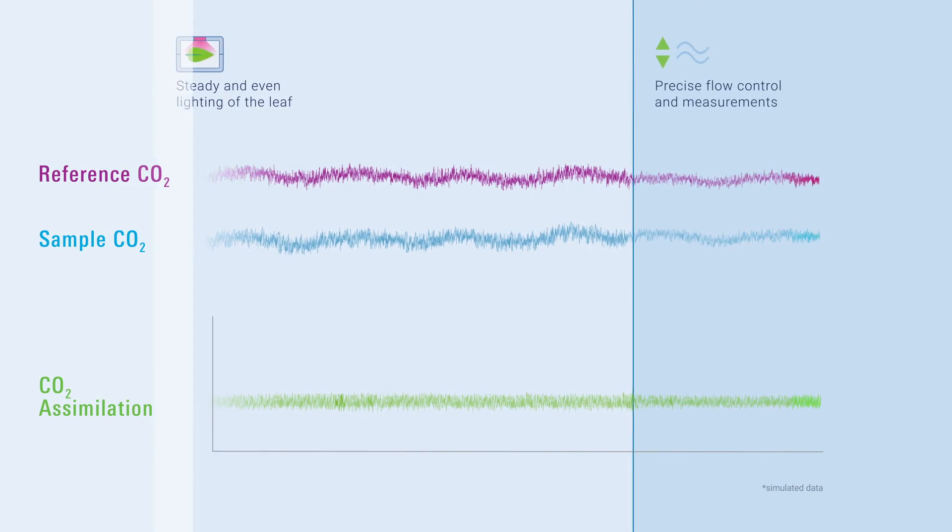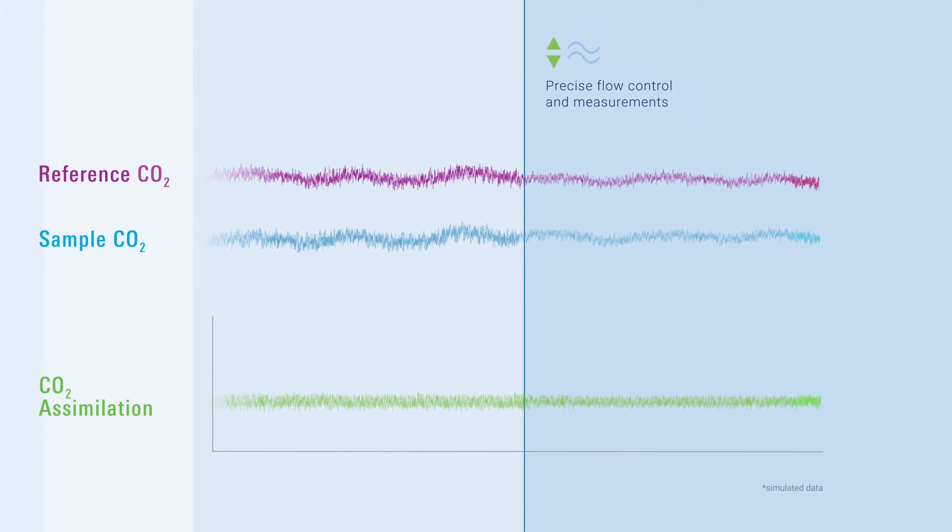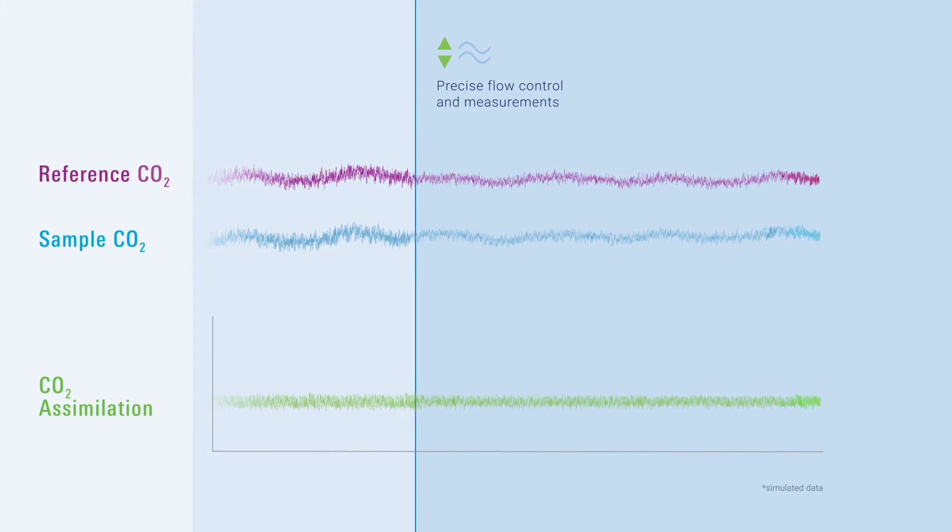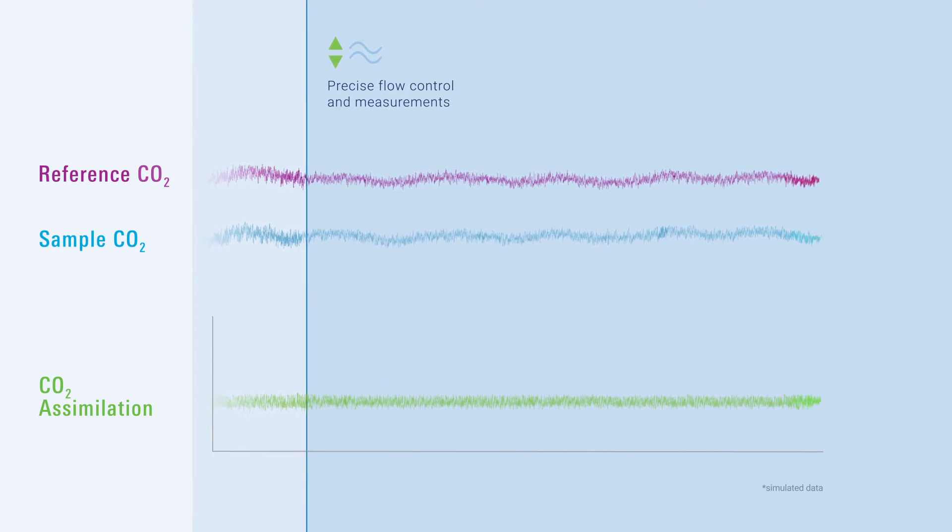The instrument measures flow to the leaf chamber and precisely controls it, which decreases errors in the computed assimilation rate.